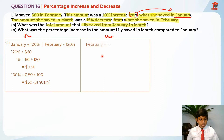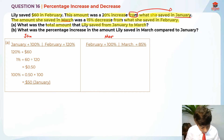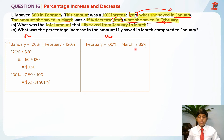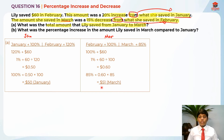Now we can move on to finding March. Some of you might wonder why February is 100% here — this is the key to solving the question. The problem says March is a 15% decrease from what she saved in February. The word 'from' tells us February is the base, so February is 100%. March is 85% because 100% minus 15% is 85%. We know 100% is $60, so 1% is 60 divided by 100, which gives us $0.60. Then 85% is $0.60 times 85, which equals $51 for March.